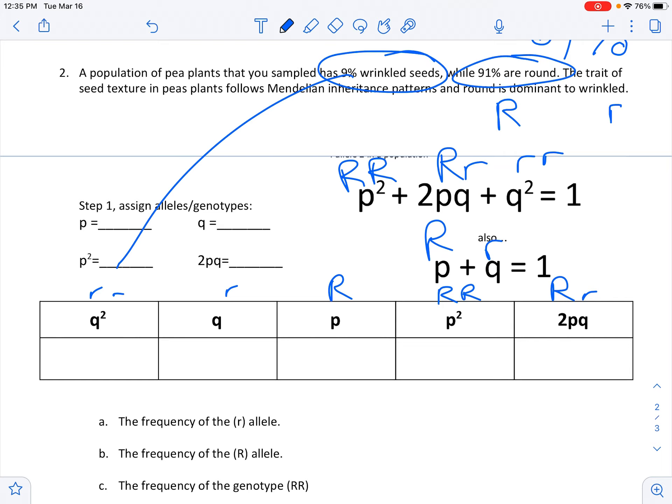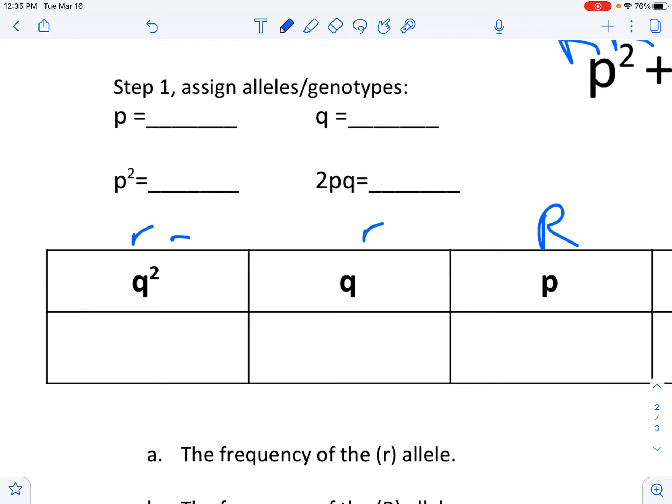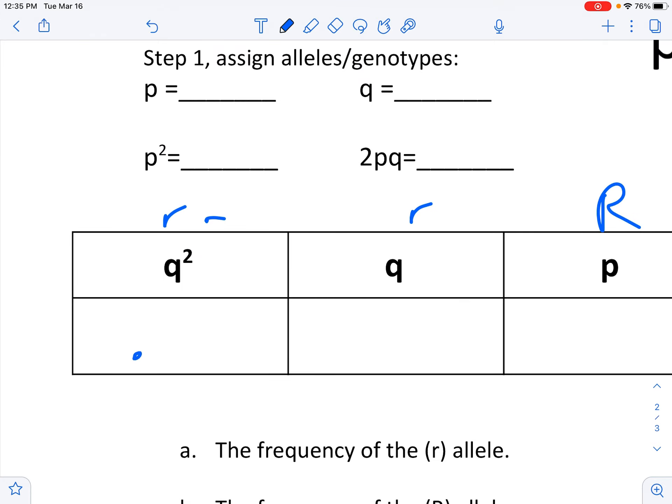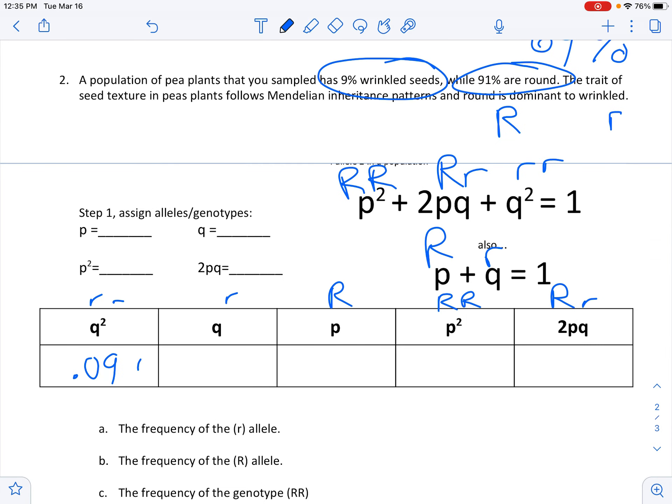So 9% would be 0.09 in decimal format. And then go ahead and just unsquare that number, and then do the difference of 1 to go here. Square the number to go there, and then solve for 2pq by putting in the values in the p² + 2pq + q² = 1 equation. So go ahead and do that, and then check your answers.